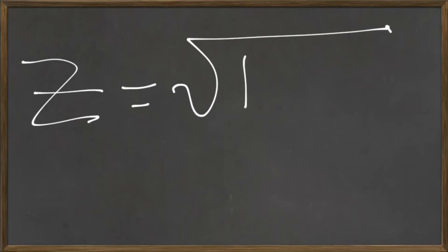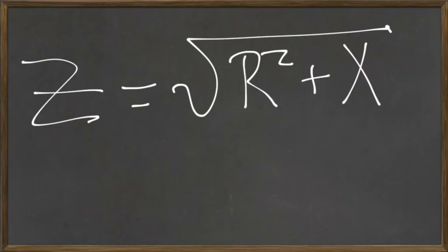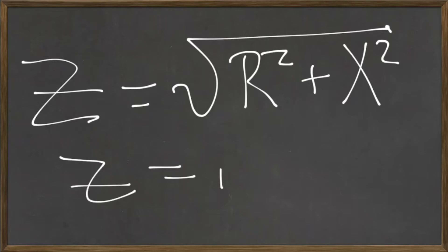The overall impedance of the RLC circuit is the square root of resistance squared plus net reactance squared. So when the net reactance is zero, the impedance is just equal to R.